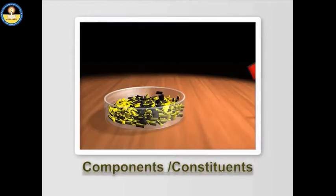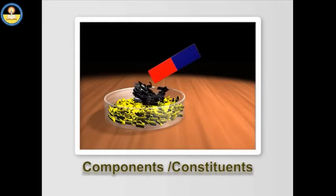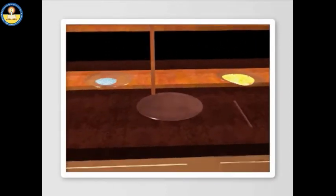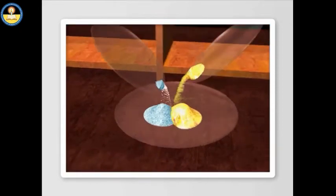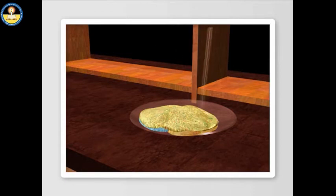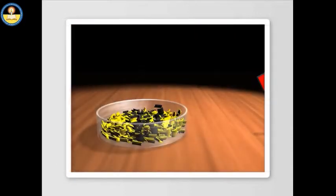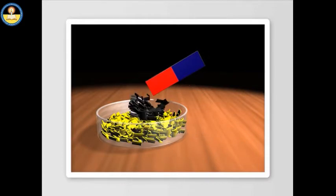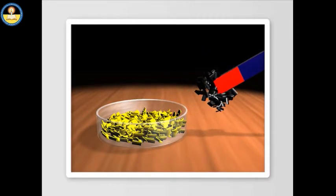The pure substances present in a mixture are also called its components and constituents. Two or more components present in a mixture can be mixed in any ratio by any physical or mechanical means to form a mixture. The individual components, i.e., the pure substances present in a mixture, can be separated by physical or mechanical process.